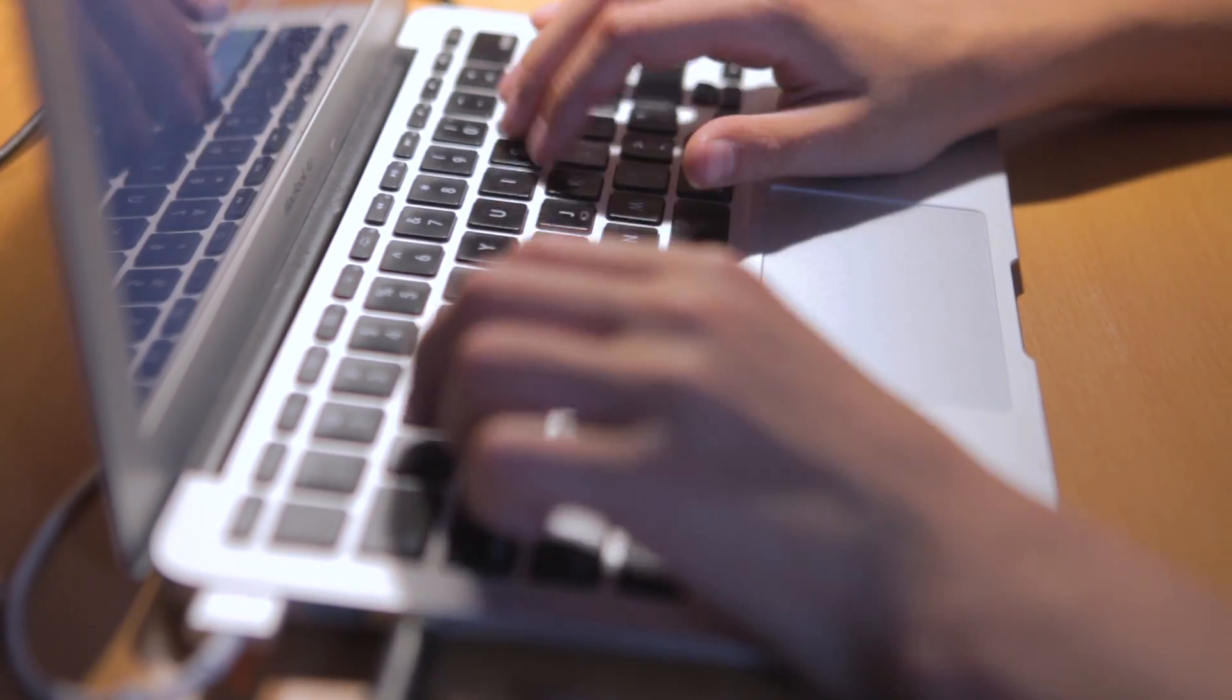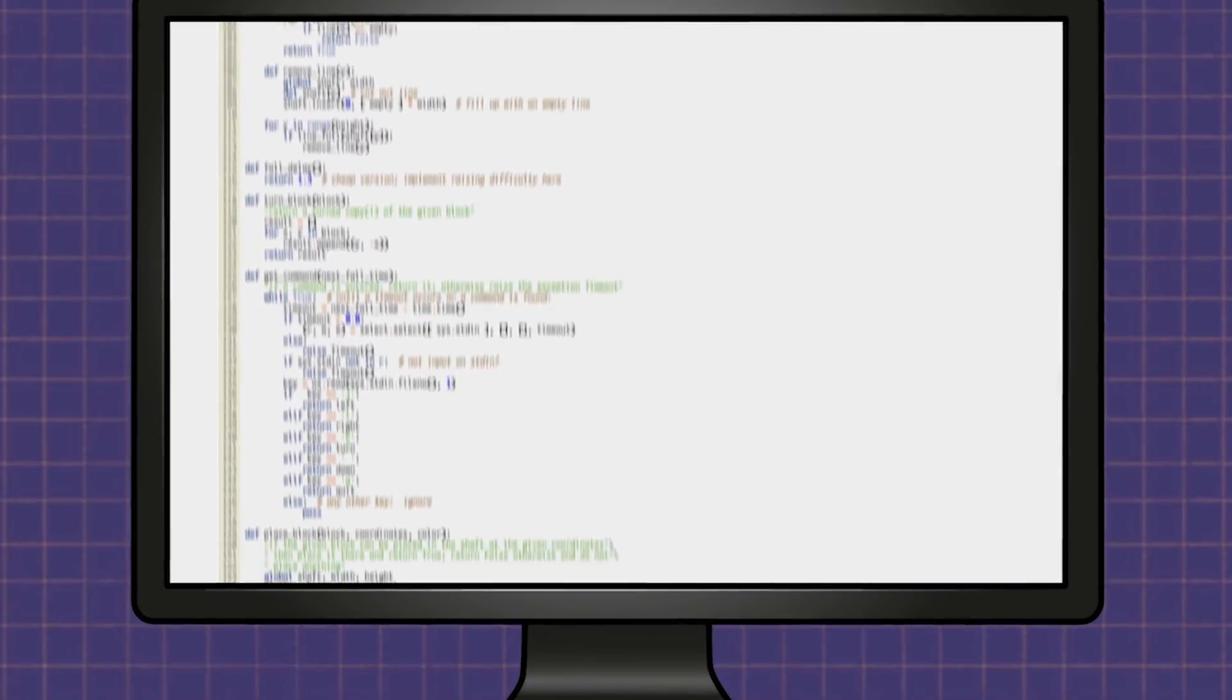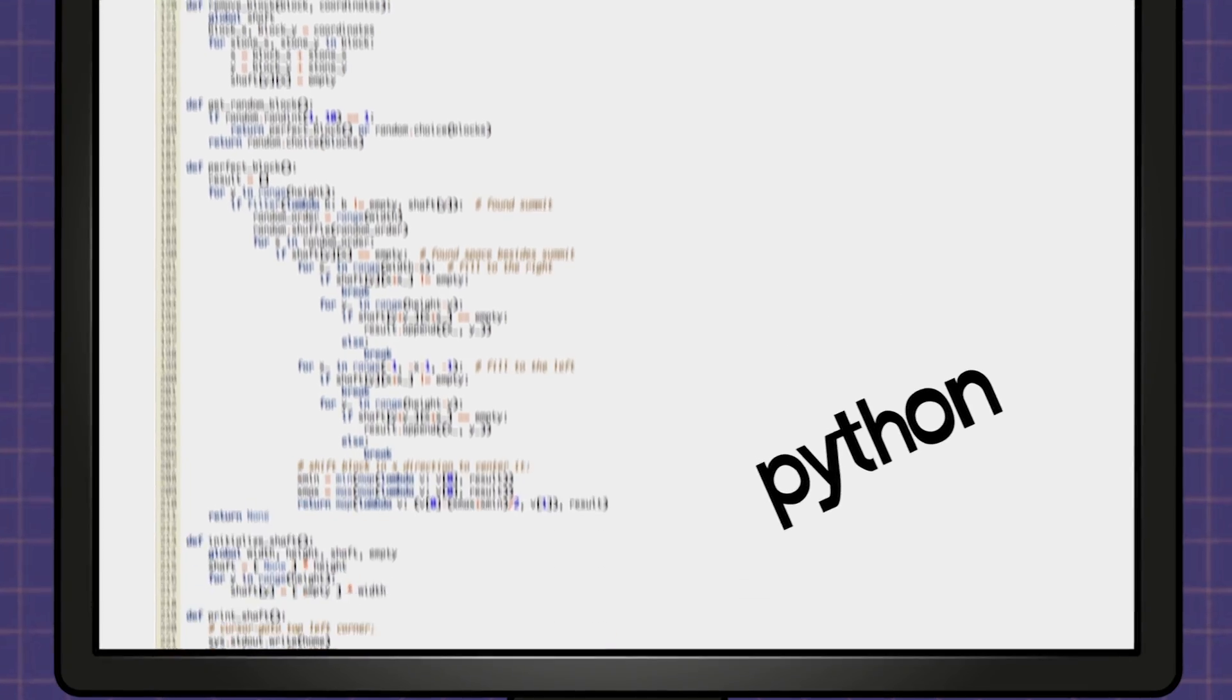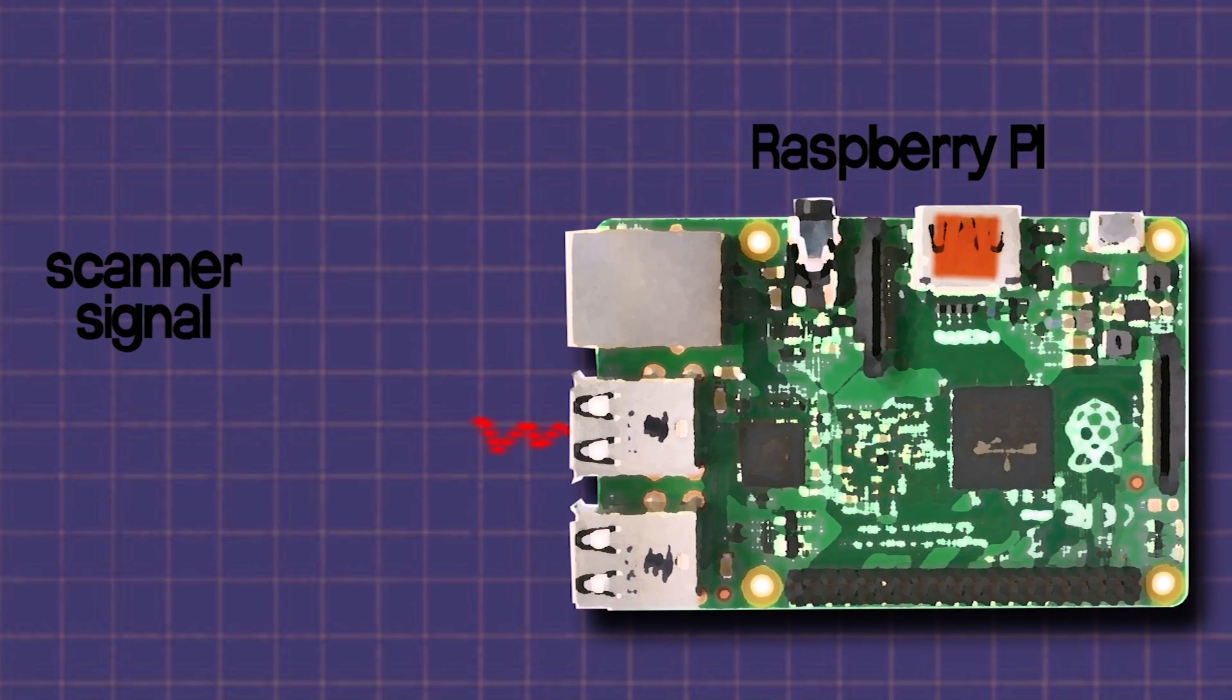Although this seems pretty straightforward, there was a lot of coding we needed to do. We needed to teach ourselves how to write in a programming language called Python. Basically we had to write lines and lines of code to tell the Raspberry Pi what to do when the scanner reads the code. All the coding took about three days.